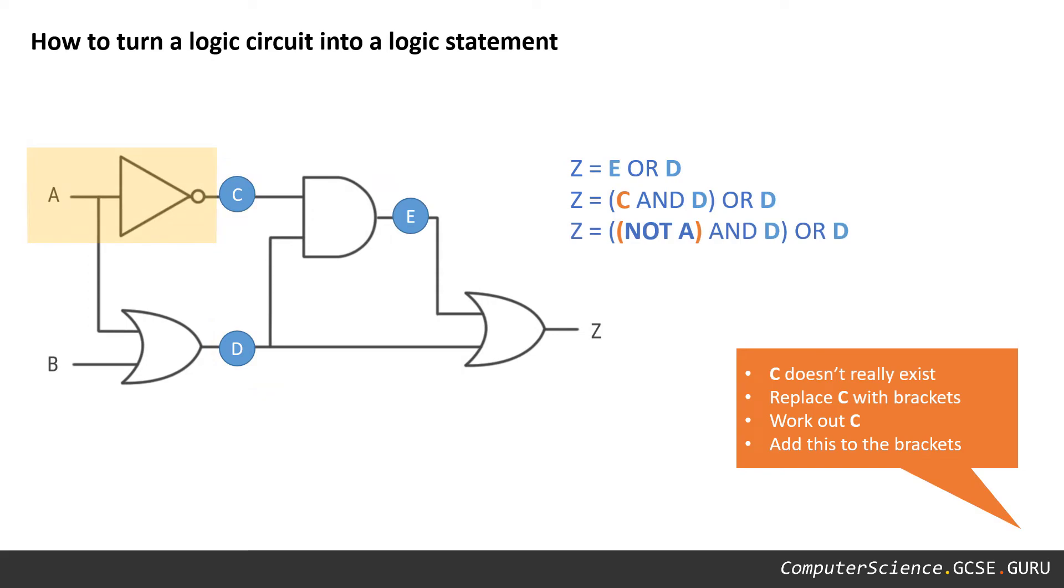Our next step after that is to look at our statement again and realize that C also doesn't exist, so C needs to be replaced with a set of brackets and to expand out the problem again. C is actually the same as not A.